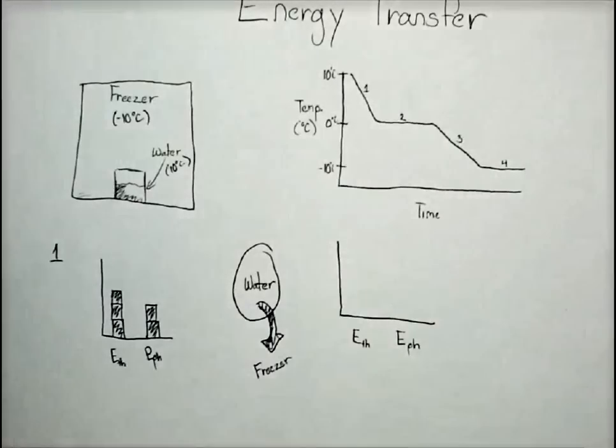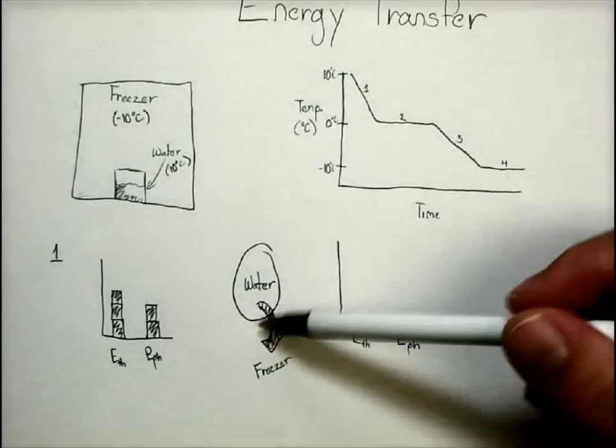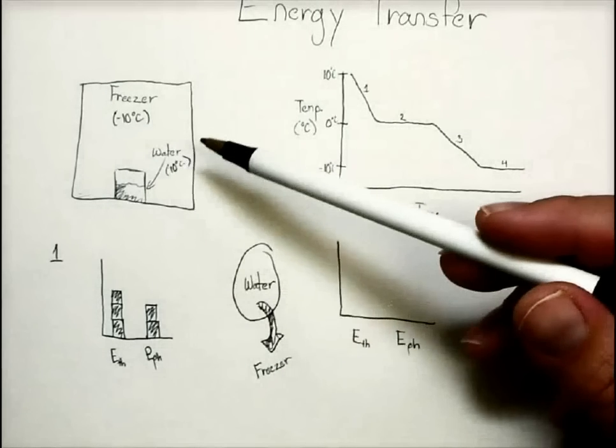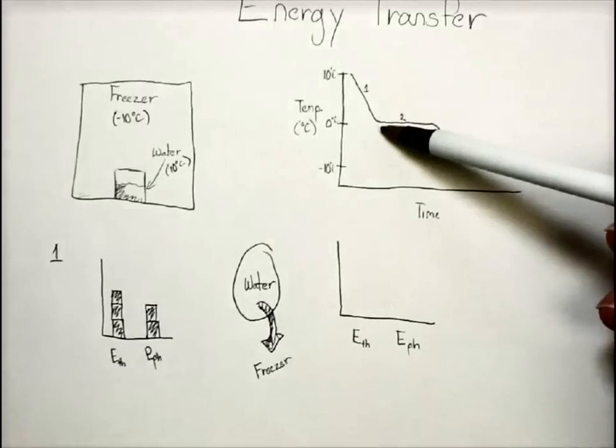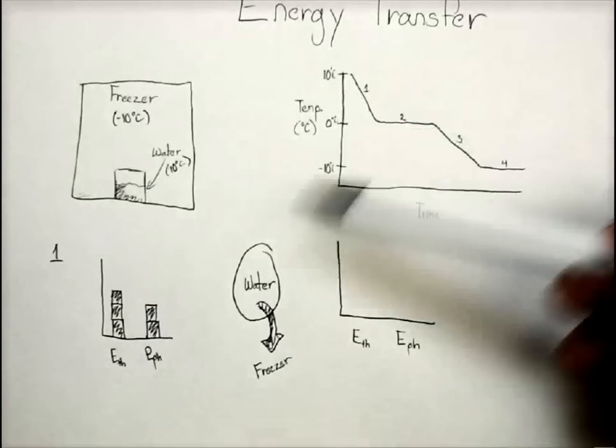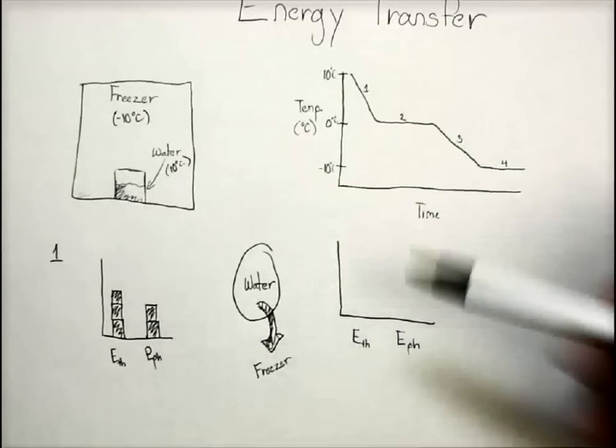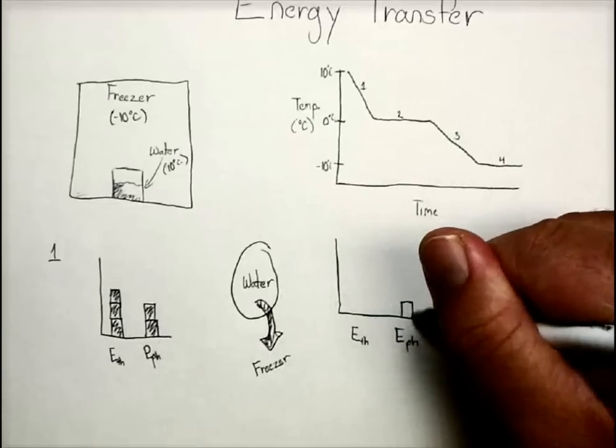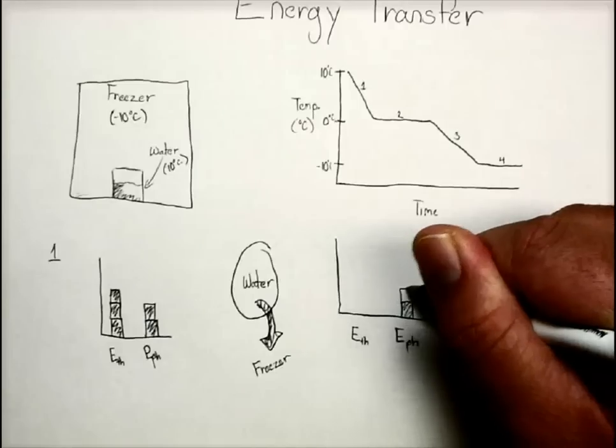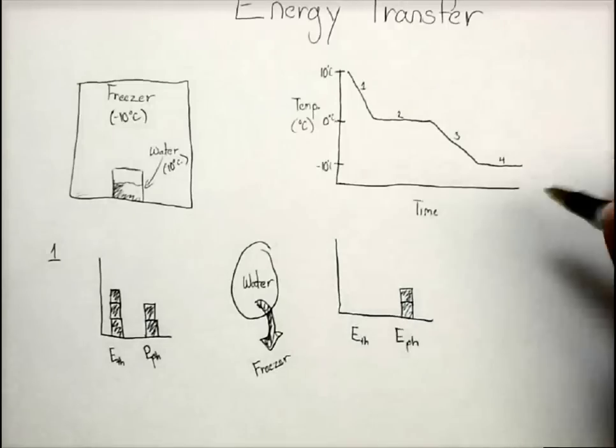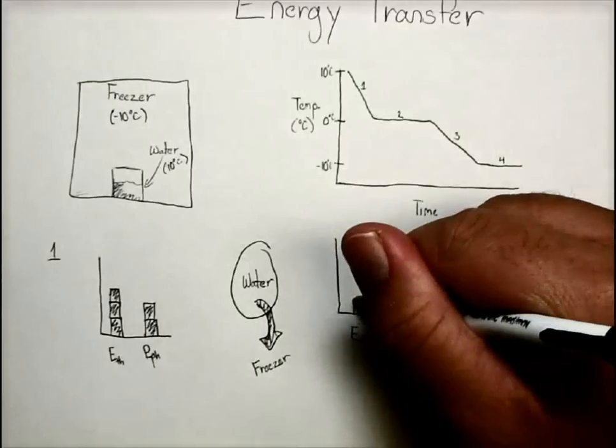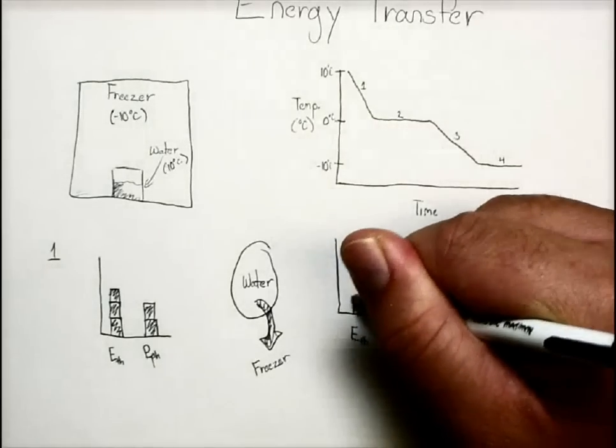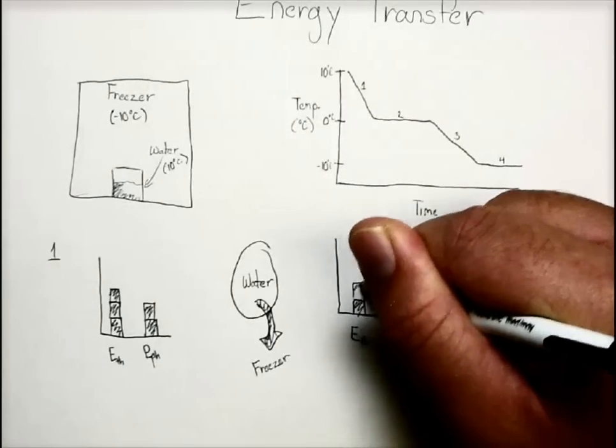And so now we have to determine where that energy is going. Well, since the water is not yet changing into ice, because it hasn't, at section 1 in the graph, it hasn't yet reached the freezing point. So it's not coming from the phase energy. The phase energy will stay the same.